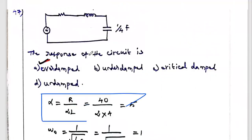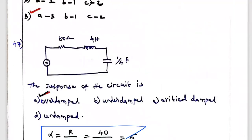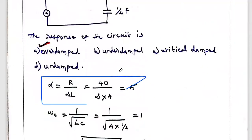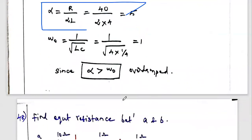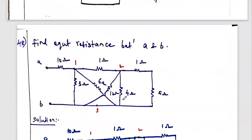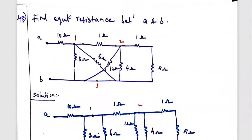Depending upon the resistor, inductor, and capacitor values, we find the alpha and omega-naught values. If alpha satisfies the condition alpha > omega-naught, the circuit is called overdamped. This is one of the key questions from this topic.